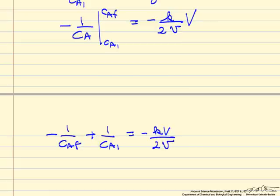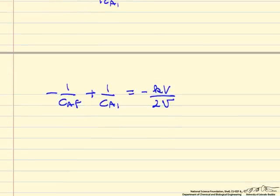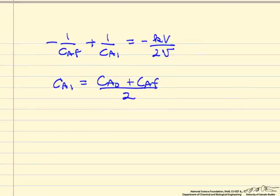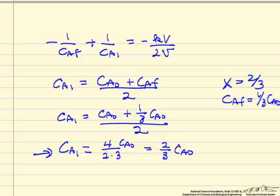Now what we want to do is do a balance around this point. We can calculate Ca1 as Ca0 plus Ca final divided by 2. We're mixing two streams with the same volumetric flow rate, so we have Ca1 now in terms of Ca0. If X is 2 thirds, then Ca final is 1 third of Ca0. So this is 1 third Ca0 divided by 2. So we now have Ca1 in terms of Ca0.